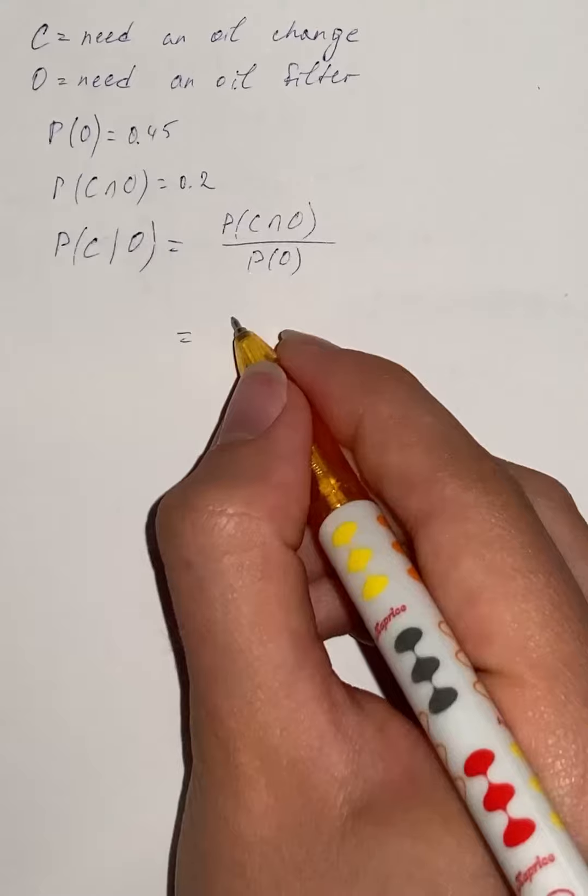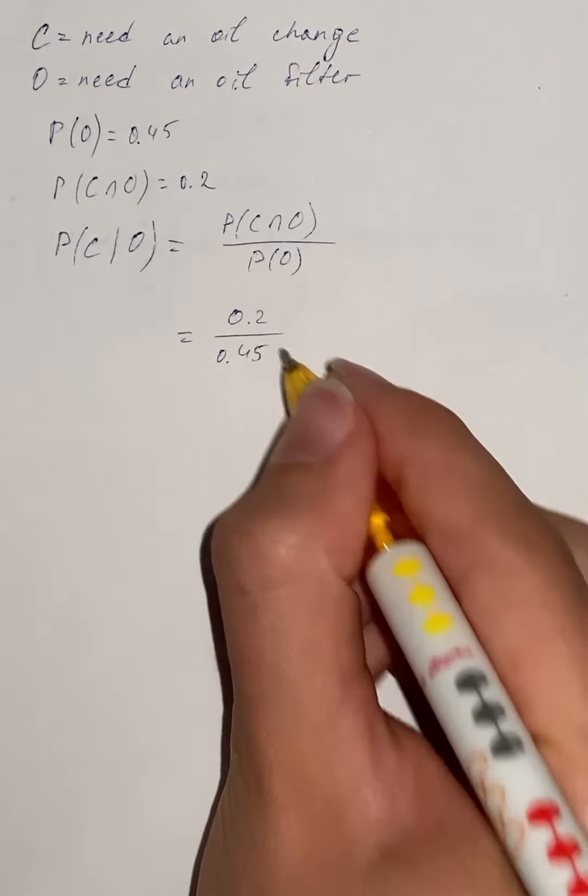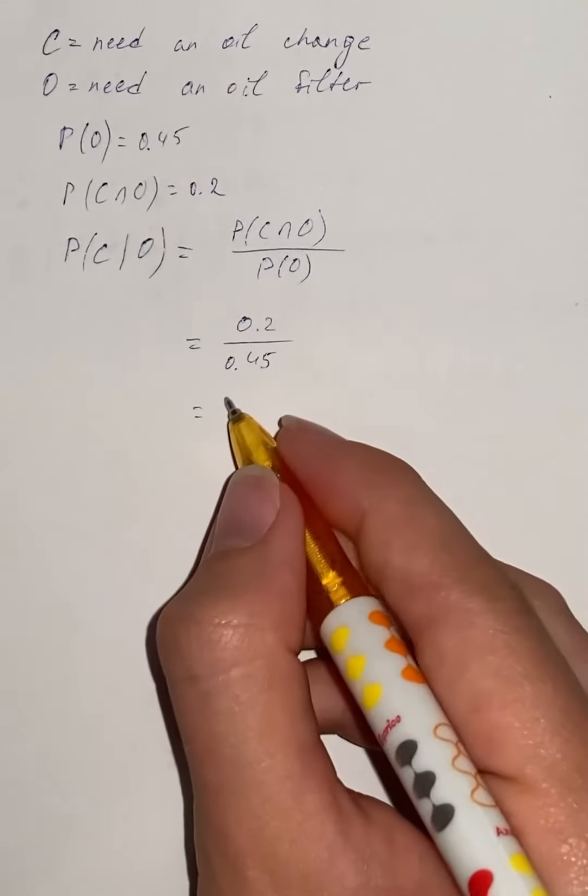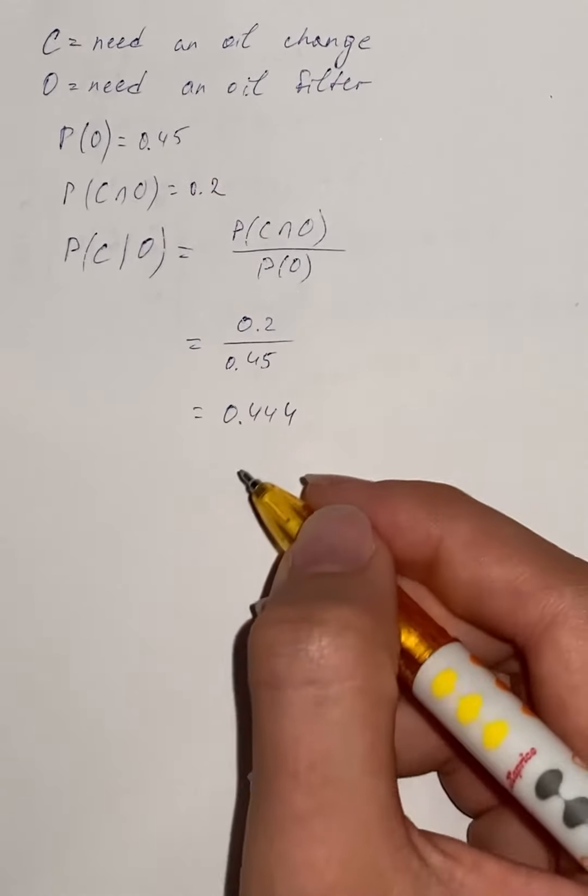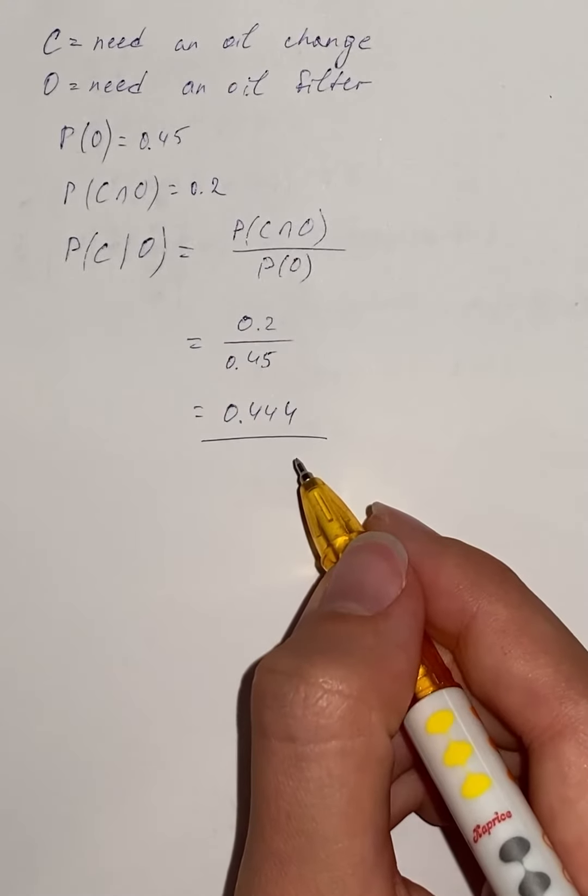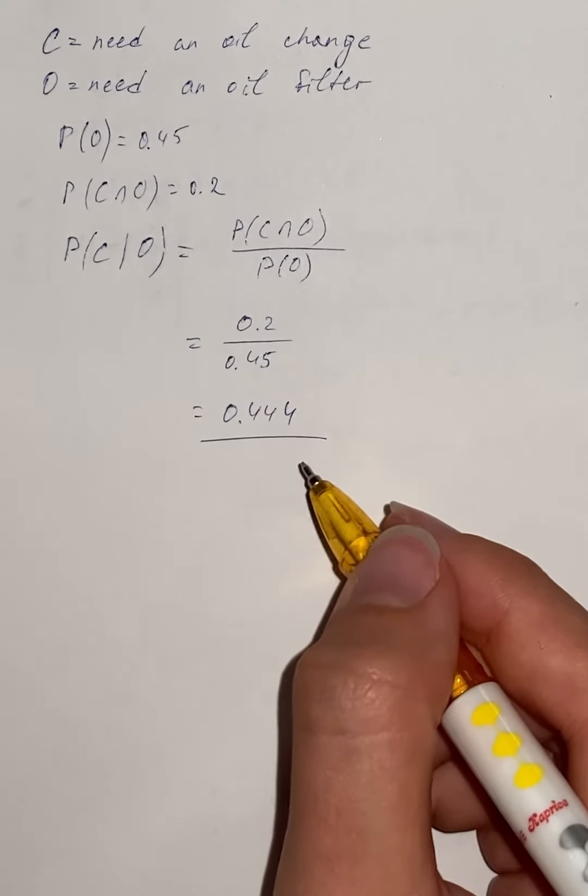And that's going to be 0.2 divided by 0.45 which equals 0.444. So that's the probability that oil has to be changed if a new oil filter is needed.